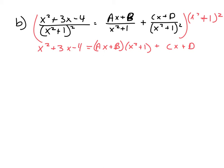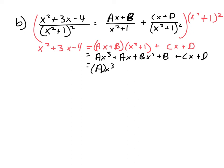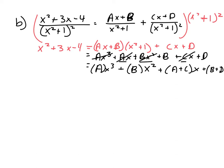Let's start by expanding. Foiling ax plus b times x squared plus 1 gives ax cubed plus ax plus bx squared plus b. Adding cx plus d and combining like terms: ax cubed, plus bx squared, plus a plus c times x, plus b plus d.